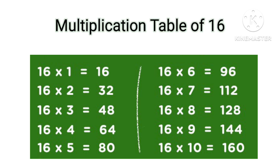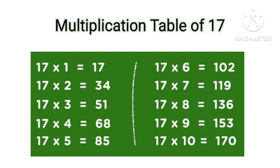Table of 16: 16×1=16, 16×2=32, 16×3=48, 16×4=64, 16×5=80, 16×6=96, 16×7=112, 16×8=128, 16×9=144, 16×10=160.